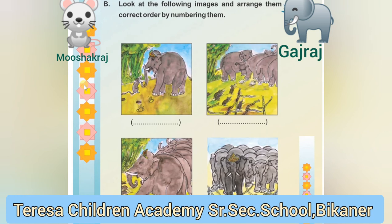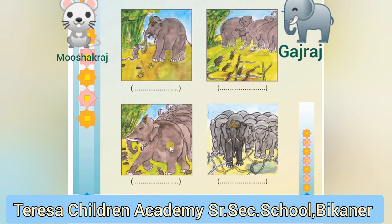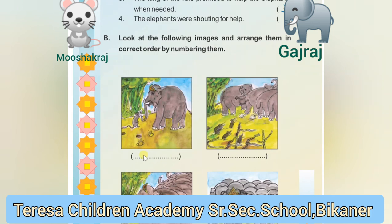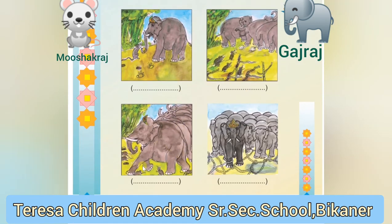Exercise B: Look at the following images and arrange them in the correct order by numbering them according to the story. The correct order is: the third image is number one, the first image is number two, and the second image comes after that. Complete it in this manner.